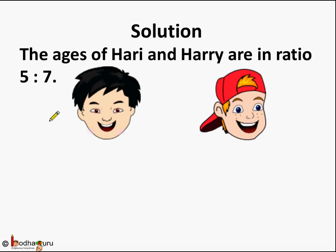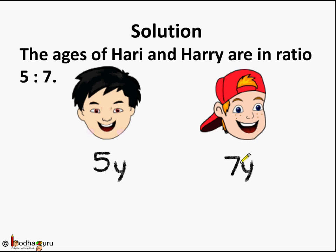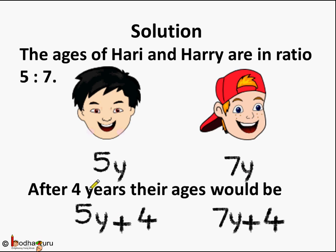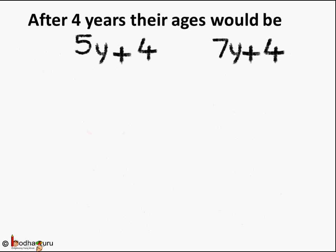We know the ratio of the ages of Hari and Harry are in ratio 5 is to 7. So let us assume a variable y such that the age of Hari is 5y and the age of Harry is 7y. After 4 years, Hari's age would be 5y plus 4 and Harry's age would be 7y plus 4.